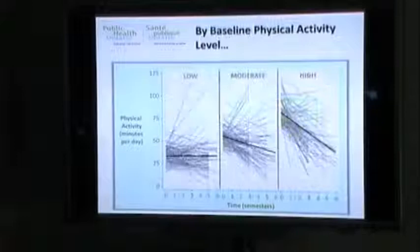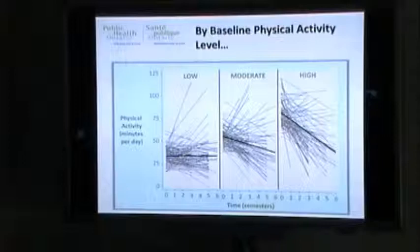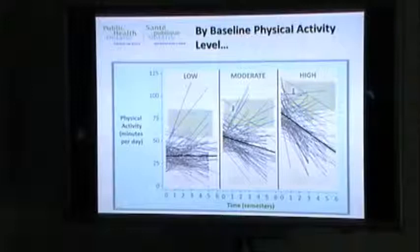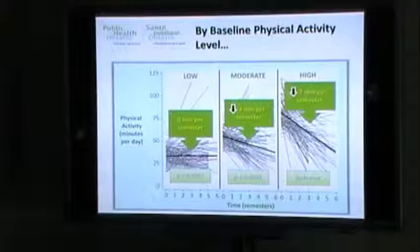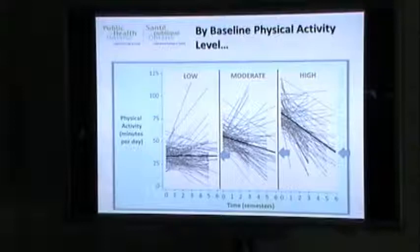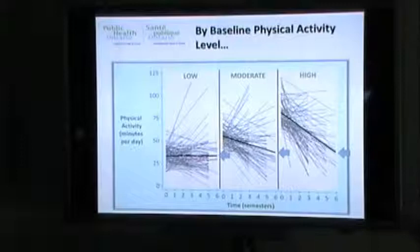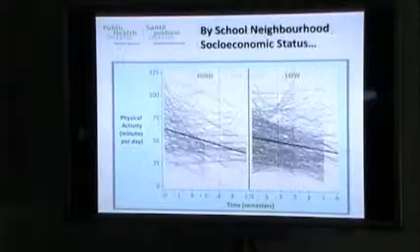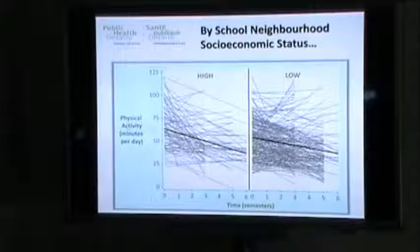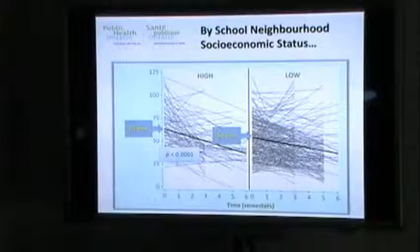We also looked at trajectories based on baseline physical activity levels — broken into low, moderate, and high. There were significant differences in the average rate of change for low compared to high and moderate compared to high. Interestingly, regardless of their baseline levels, all kids averaged about 30 minutes of moderate to vigorous physical activity by the end of the study. We also found that kids attending schools in high socioeconomic neighborhoods participated in more physical activity than those in low socioeconomic neighborhoods.